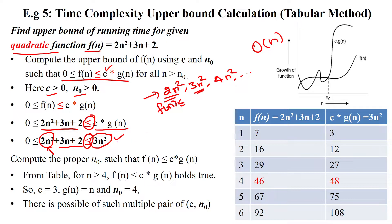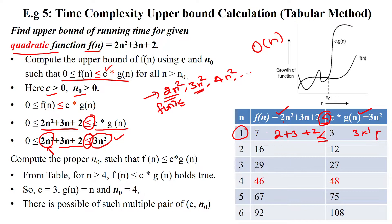We apply the tabular method with f(n) = 2n² + 3n + 2 and c·g(n) = 3n². When substituting n=1: f(1) = 2(1) + 3(1) + 2 = 7, and c·g(1) = 3(1) = 3. Since f(n) should be less than or equal to c·g(n), this is false.